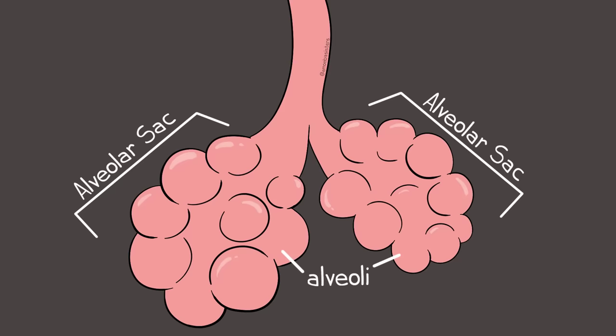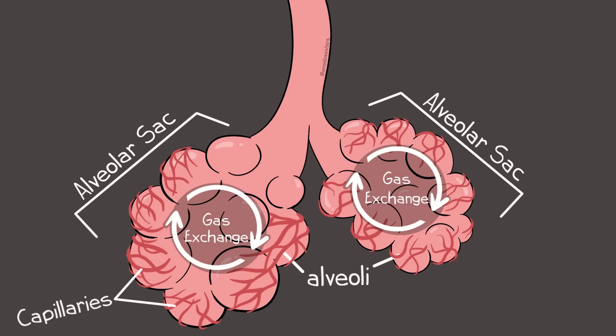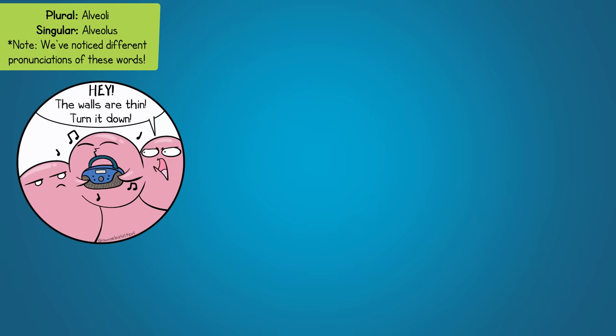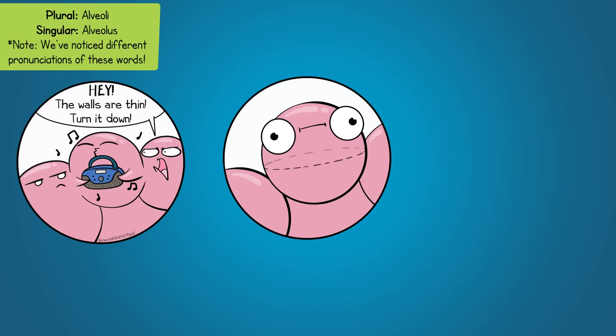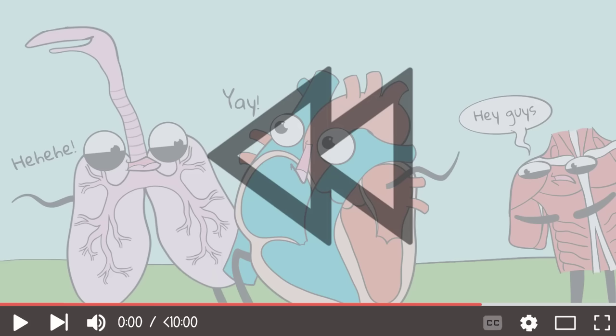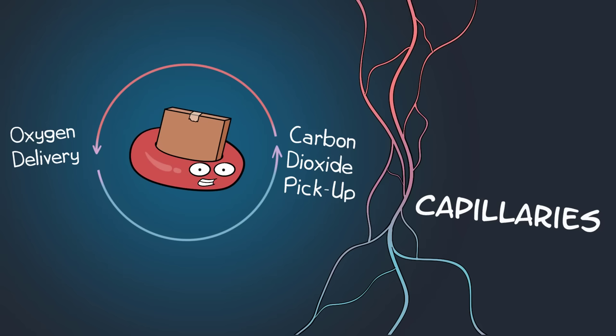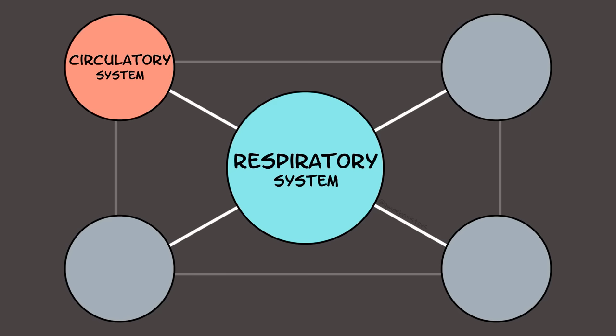Each alveolar sac contains alveoli, and this is where gas exchange actually occurs. These alveoli are made of thin-walled cells with lots of surface area and direct contact with capillaries. The circulatory system works closely with the respiratory system here — red blood cells in the capillaries can pick up inhaled oxygen to deliver it throughout the body, and also bring carbon dioxide, a waste gas that needs to be removed so it can be exhaled.